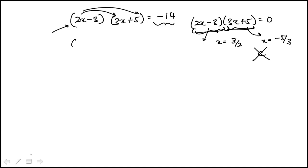So that's going to be 6x squared plus 10x minus 9x. And then the last term is minus 15 equal to minus 14. I'm going to combine like terms, so that's plus x. Move the 14 here, it's going to become minus 15 plus 14, so minus 1.